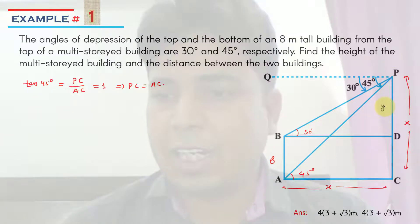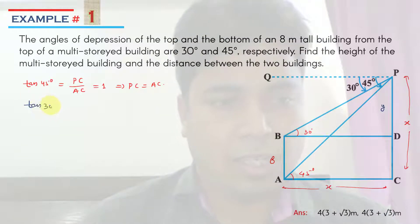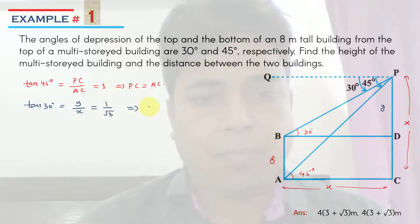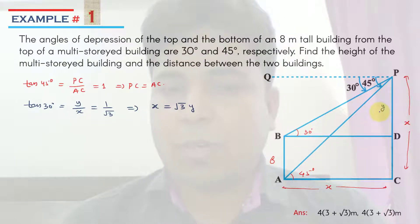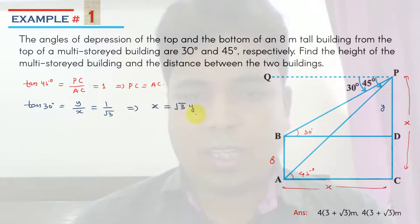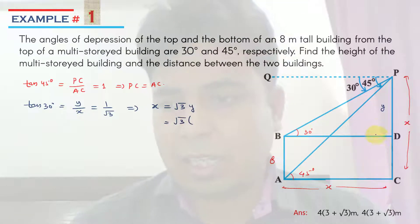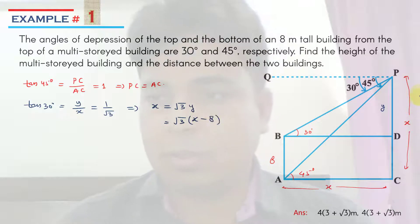Let's say PD length is y. Then tan 30° equals y upon x, and tan 30° is 1 upon root 3. So this implies x is equal to root 3 times y. And y is nothing but x minus 8 — the whole length is x, so we subtract 8.